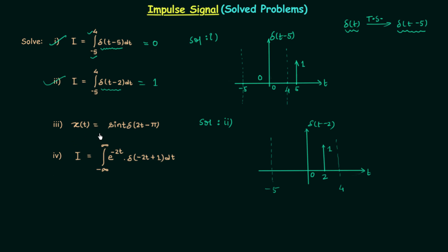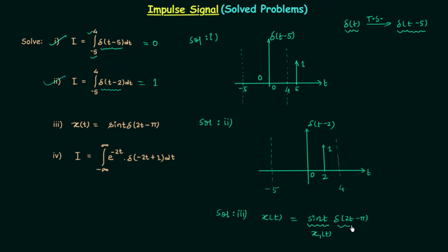In the third problem, signal x(t) is given as sin(t)·δ(2t-π). To solve it we will use the property of multiplication and also the property of time scaling. Here sin(t) is signal x₁(t), and we are multiplying the impulse to x₁(t).